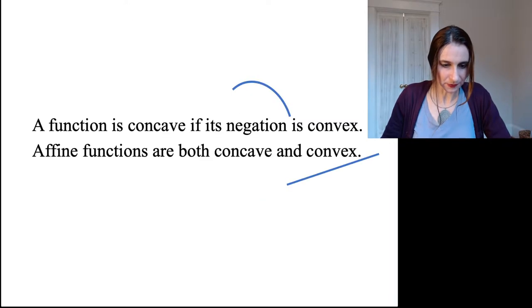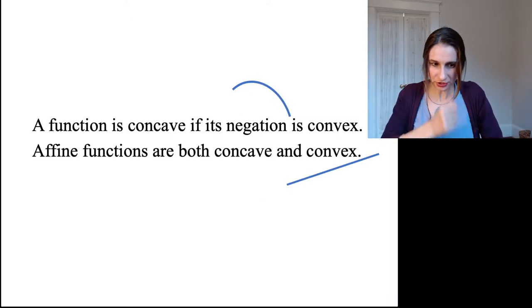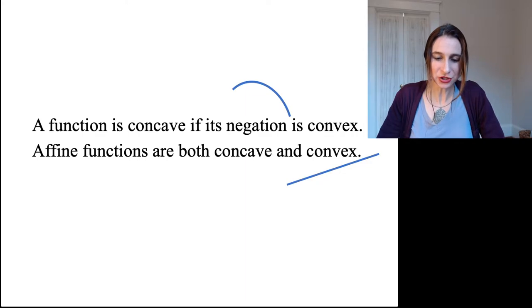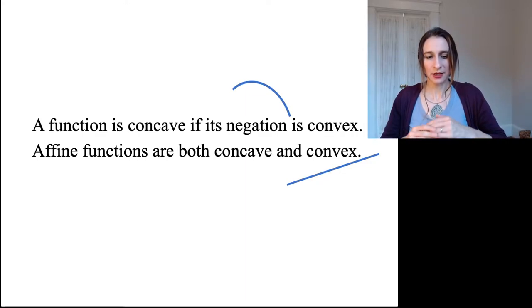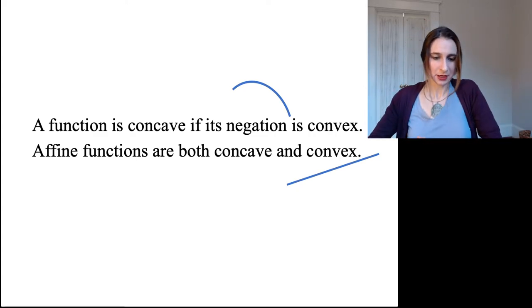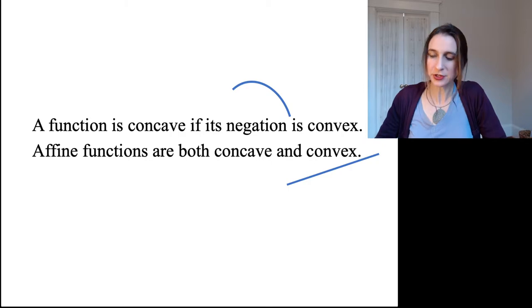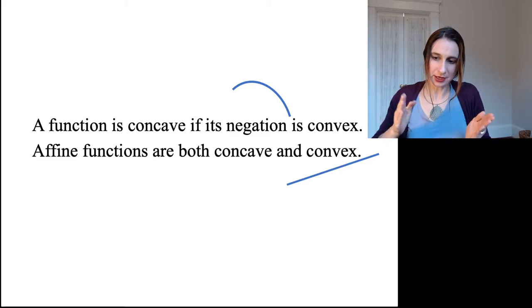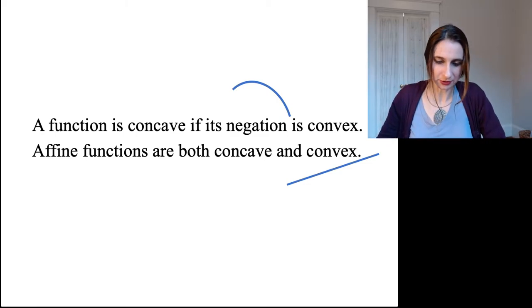Okay, so a function is concave if its negation is convex. So you want to think of a concave function as an upside-down convex function. Okay, and affine functions are considered to be both concave and convex, right? You flip them upside down, you get the same thing. You put two people on the line, the line doesn't interfere with their sight of each other.